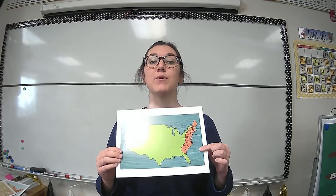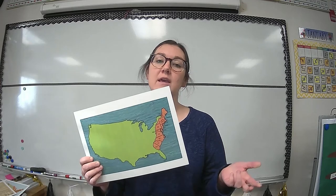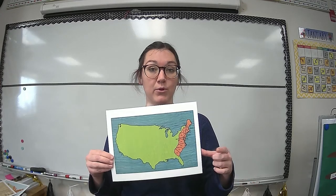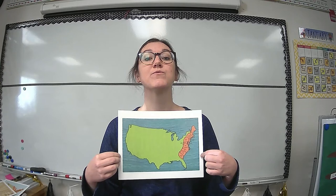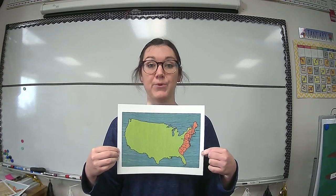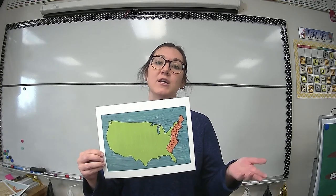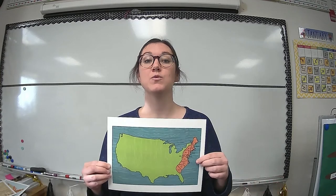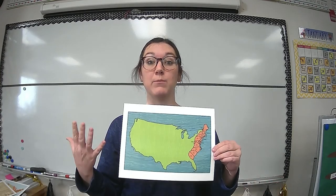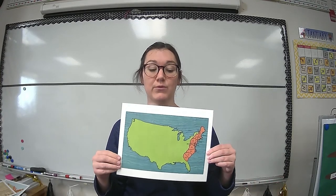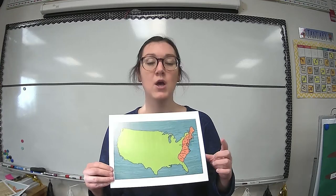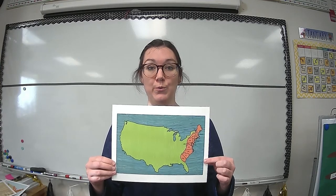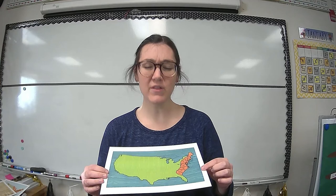People that lived in or settled the 13 original colonies came from England. They came for a lot of different reasons. A big reason that people came to the Americas was for religious freedom. In England, you had to be a part of the Church of England, so people that wanted to practice different religions moved to the United States so that they would have the freedom to do so.